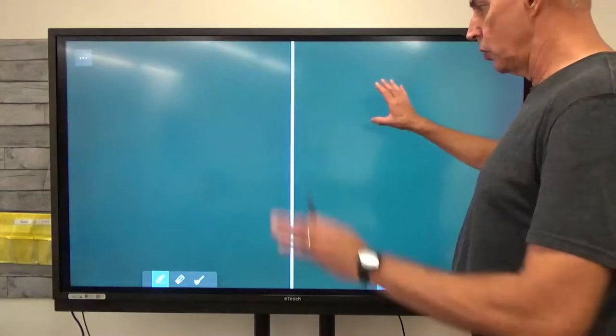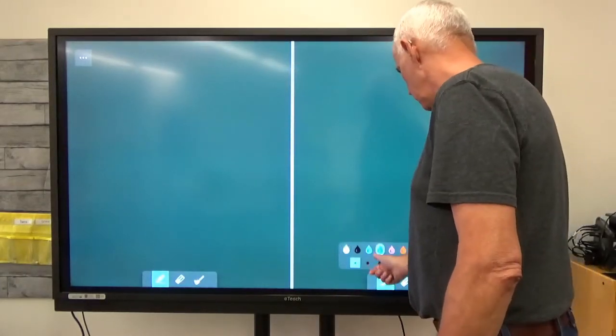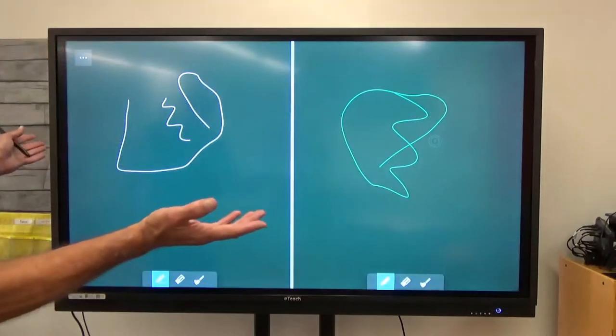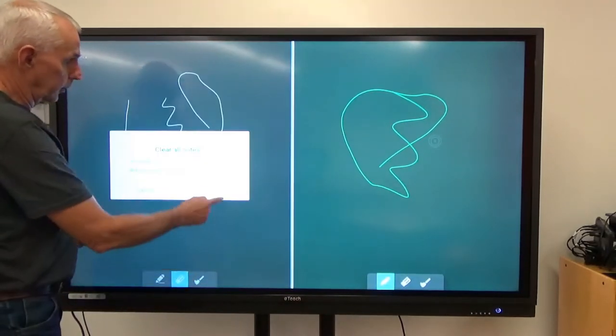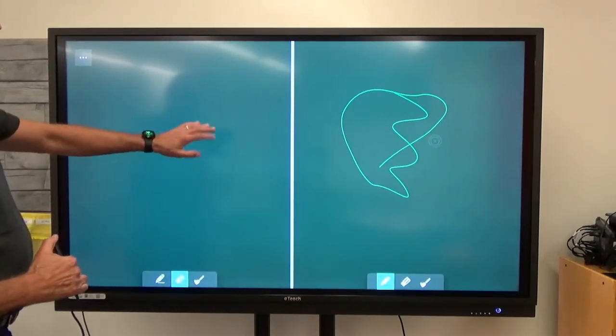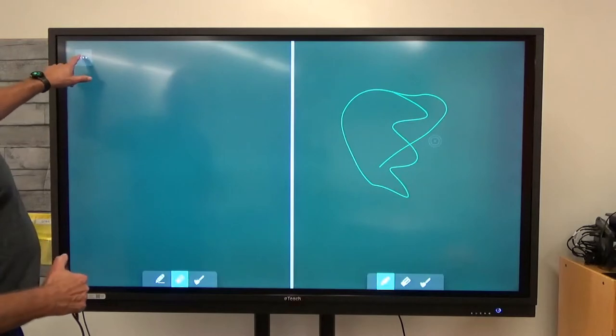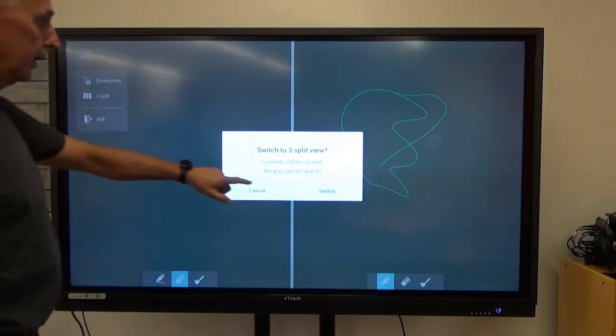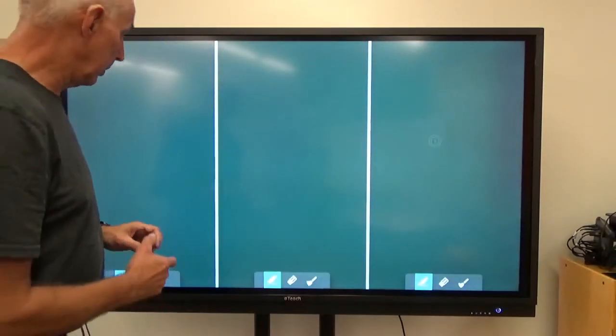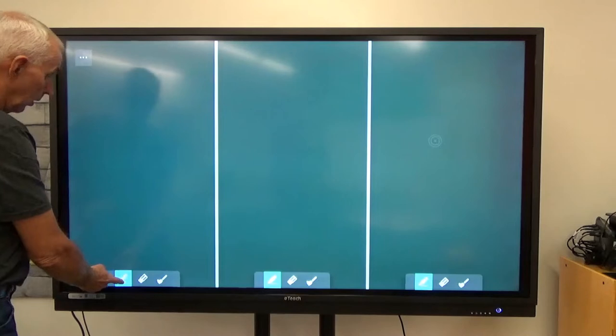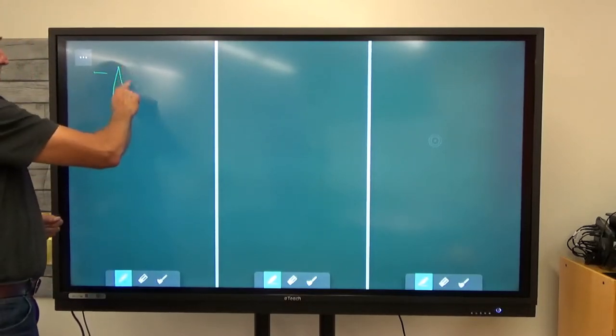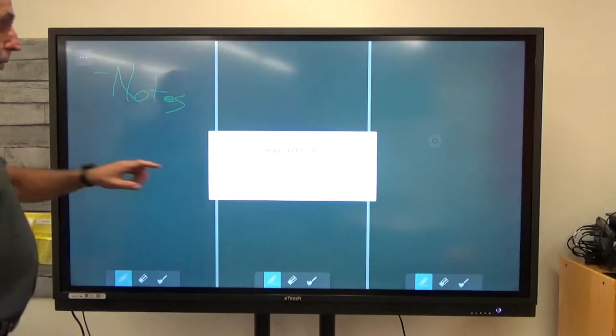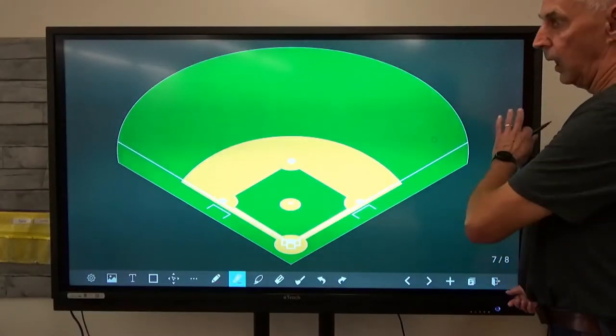And so what it is, it allows two people to be up here writing at the same time. So they can write independently of however it is that you want to use this. Each one has its own eraser. Each one, when I clear one, it only clears one side. Another thing that we can do from here, I can split it into three. Three dots in a computer always means there's something more. So I can split it into three. I can have three people working up here. Or if you want to do your notes however you might want to use this. And then to exit out of here, I do an exit and I'm out. And so that's the whiteboard.